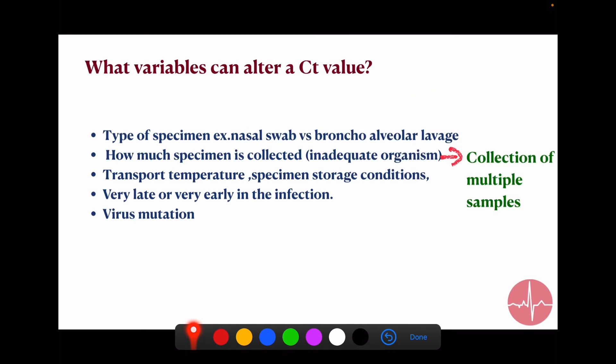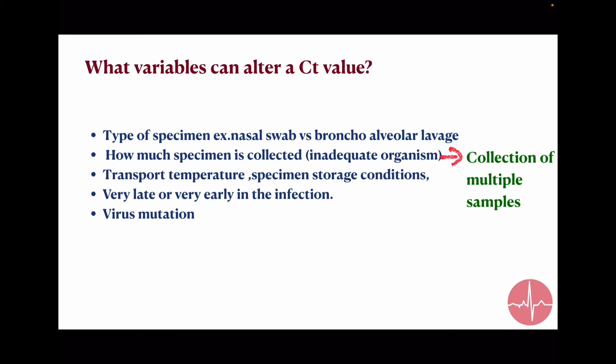And what variables can alter the CT value? First, type of specimen like nasal swab versus bronchoalveolar lavage. Bronchoalveolar sample detects the virus more accurately compared to the nasal swab. Second, how much specimen is collected? Because if we don't have an adequate organism, we can't detect it. That's why we routinely collect multiple samples.